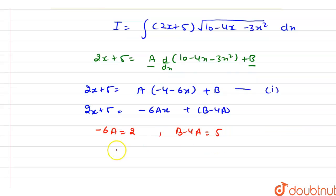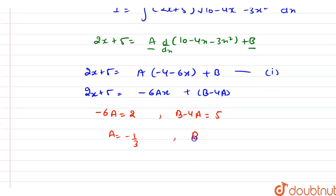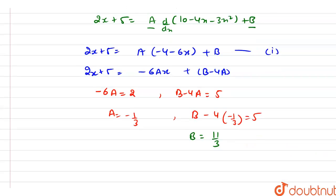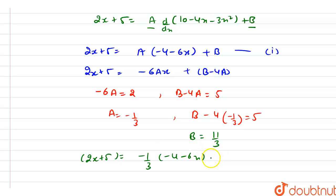So the value of a is minus 1 by 3. From here the value of b will be: b minus 4 into (minus 1 by 3) equals 5. After solving further, b equals 11 by 3. So 2x + 5 equals (minus 1 by 3) into (minus 4 minus 6x) plus 11 by 3, from equation 1.